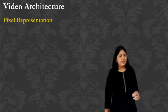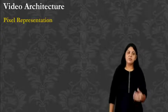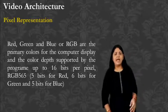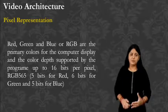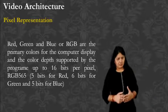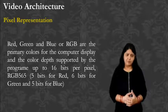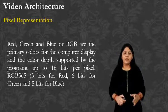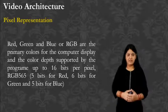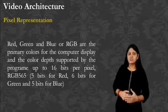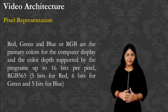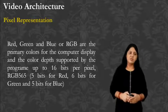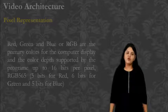Now, the video architecture — the first element is pixel representation. Red, green, blue — RGB — are the primary colors for computer display. The color depth supported by the program is up to 16 bits per pixel. So RGB 565: 5 bits for red, 6 bits for green, and 5 bits for blue.